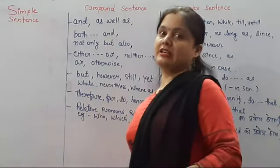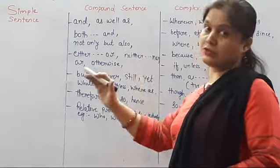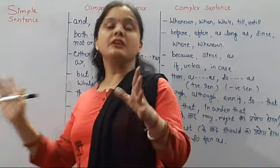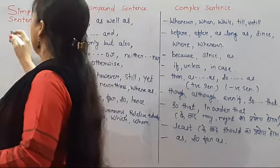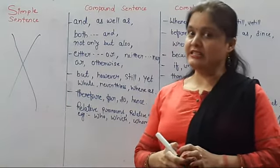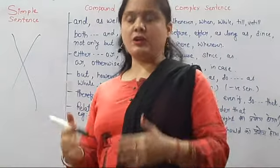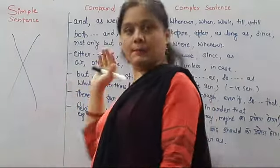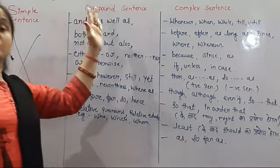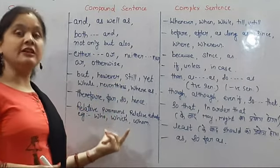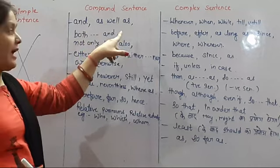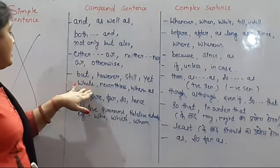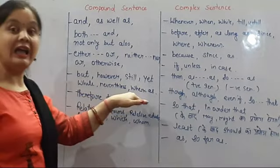Finally, I am going to tell you the connecting words — which connecting words are used in which type of sentence. First, the simple sentence column: no particular connecting word is used; there are different methods such as using a participle, noun, present apposition, etc. — there are 7 methods which I will teach you. Now for compound sentences, the connecting words are: and, as well as, both...and, not only...but also, either...or, neither...nor, otherwise, but, however, still, yet, while, nevertheless, whereas, therefore, for, so, as.